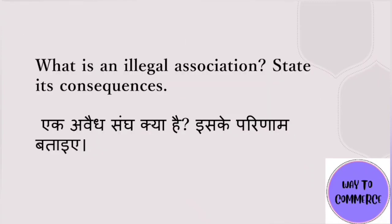The next question: what is an illegal association and state its consequences? First understand what an illegal association is, then who can apply under this provision, and then write the consequences — such as no legal existence, unlimited liability of partners, and so on. Around six to seven points cover the consequences of an illegal association.